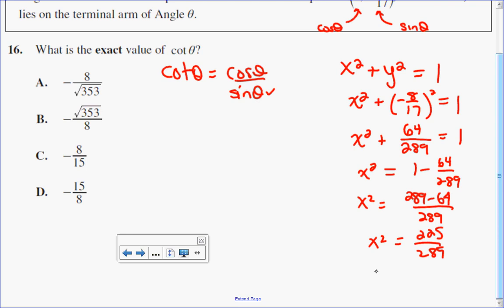And then I take the square root of both sides. So, I know my x value on the unit circle will be plus or minus the root of 225 over the root of 289.